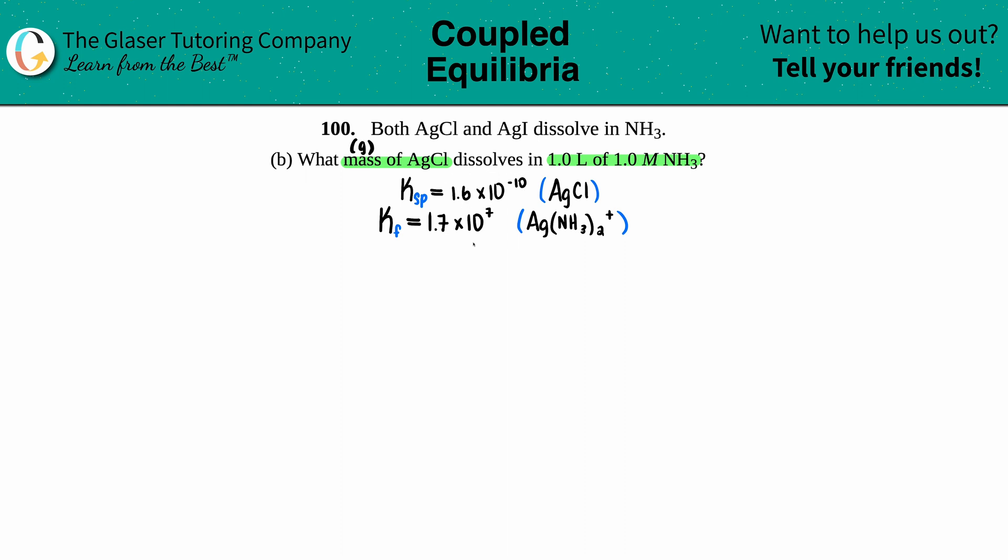What's a Ksp without its balanced equation? Let's write that out quickly. With Ksps you always start with your compound, so we have AgCl as a solid—it makes sense because you're looking for the mass, a solid precipitate.